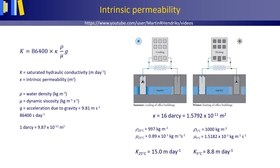The hydraulic conductivity K is a function of both properties of the porous medium through which the water flows and properties of the water itself, such as density and viscosity. The properties of the porous medium and groundwater can be separated by combining the Hagen-Poiseuille law and Darcy's law through a cylindrical tube. This gives this equation.